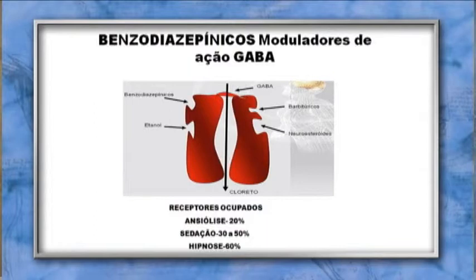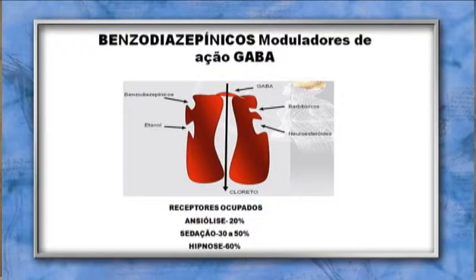Dependendo do número de receptores ocupados, a resposta aos benzodiazepínicos varia: ansiolítica com pelo menos 20% dos receptores ocupados; sedação com 30% a 50%; hipnose com mais de 60%. Os receptores benzodiazepínicos estão no córtex cerebral, hipocampo, cerebelo, núcleos da base, tronco encefálico e medula espinhal. Assim, seus efeitos podem ir de ansiolítico a sedativo, hipnótico e relaxante muscular.